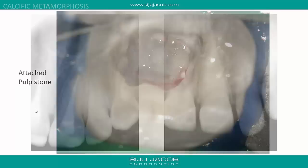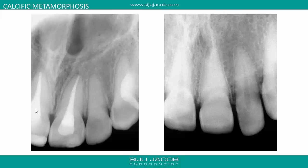Calcific metamorphosis is completely different — most of our lecture will be focused on how to handle these cases. The entire pulp gets converted into hard calcified tissue and the canal completely gets obliterated. You can see there is no trace of any canal, whereas on the adjacent tooth you can clearly see the canal. These are the most difficult cases to handle clinically, and these are all examples of calcific metamorphosis.